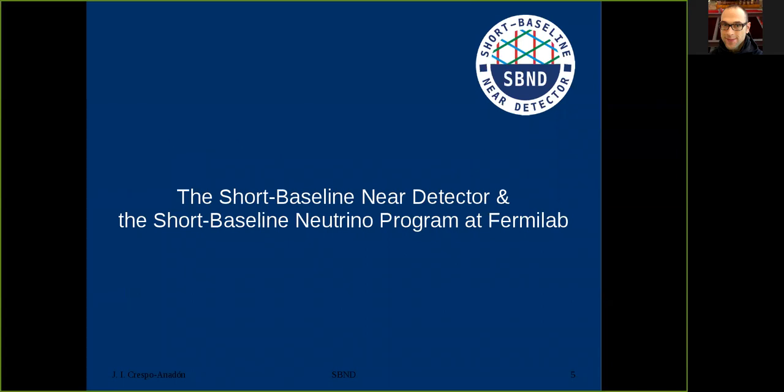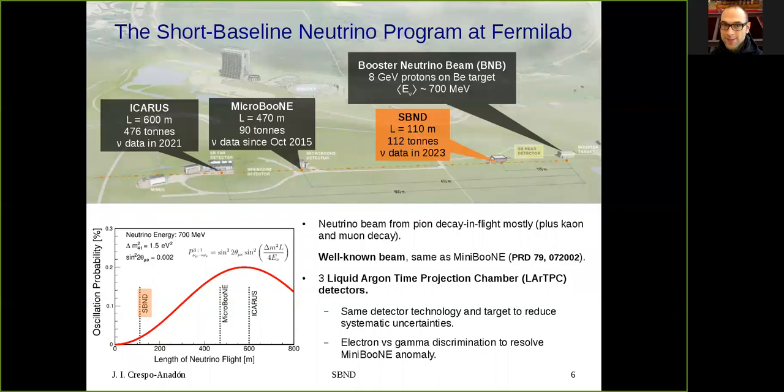Here's where the short-baseline neutrino program at Fermilab enters. The short-baseline neutrino program at Fermilab uses a neutrino beam, which is mostly from pion decay in flight, even though it has also kaon and muon decay components. It's a well-known beam, the booster neutrino beam, which is the same as MiniBooNE. Then we have three liquid argon time projection chamber detectors. By using the same detector technology and target, we reduce the systematic uncertainties. And in addition, the liquid argon TPC technology allows us to discriminate between electron and gamma in order to resolve the MiniBooNE anomaly.